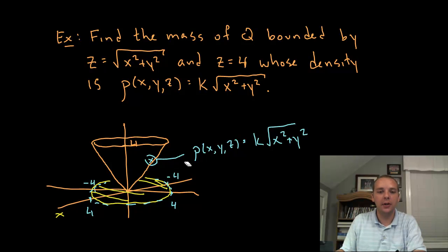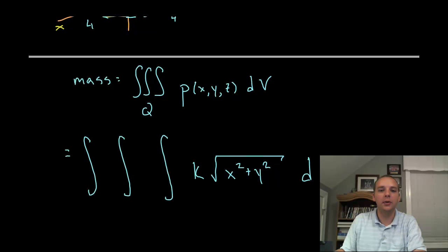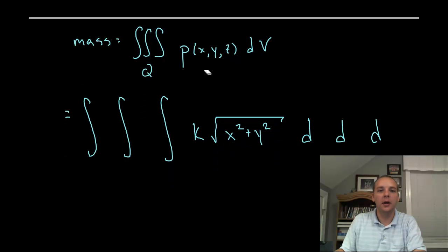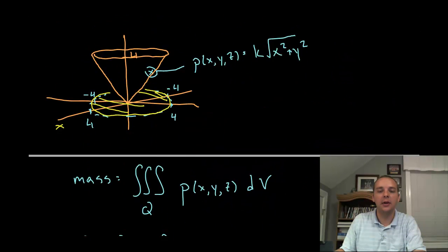So I went ahead and drew a picture here. Now there's a formula that will give you mass. It's done by taking a triple integral. Here's your formula here. Done by taking a triple integral of the density everywhere. So if you integrate over that solid the density function it will give you the mass. So I went ahead and filled in the density function and the triple integrals. So now we have to get to the meat of the problem. And that's writing the limits of integration and actually doing the integration.